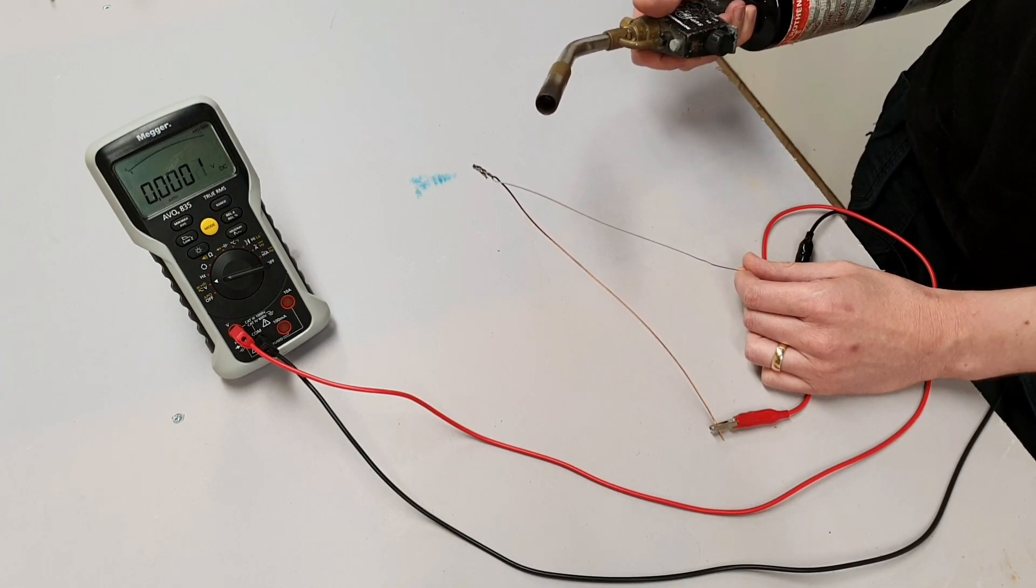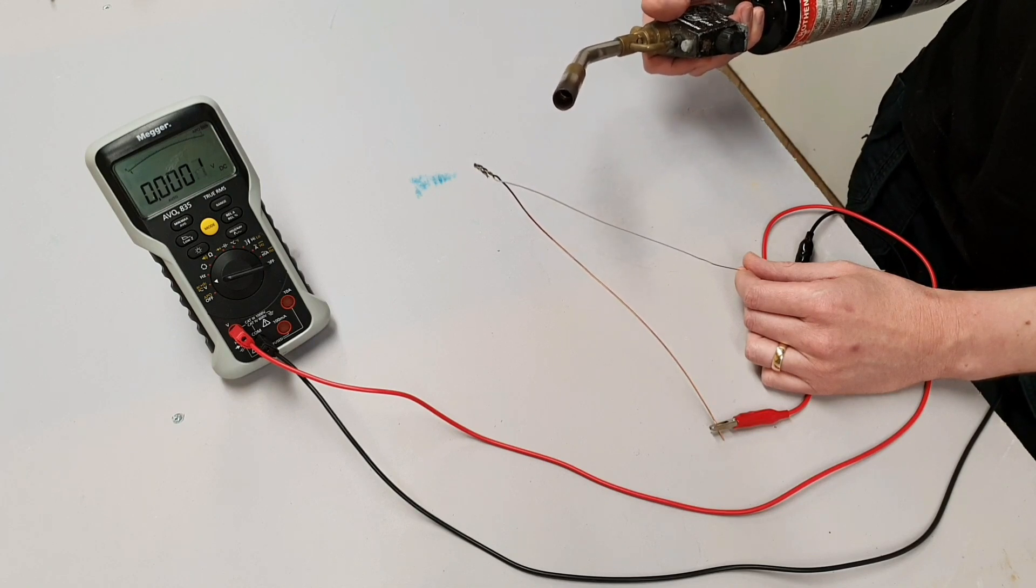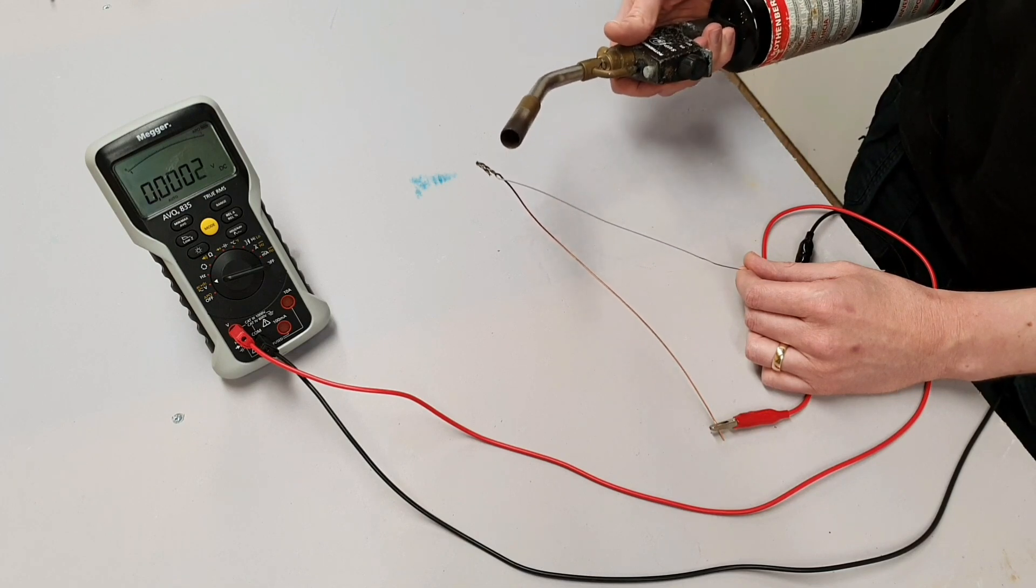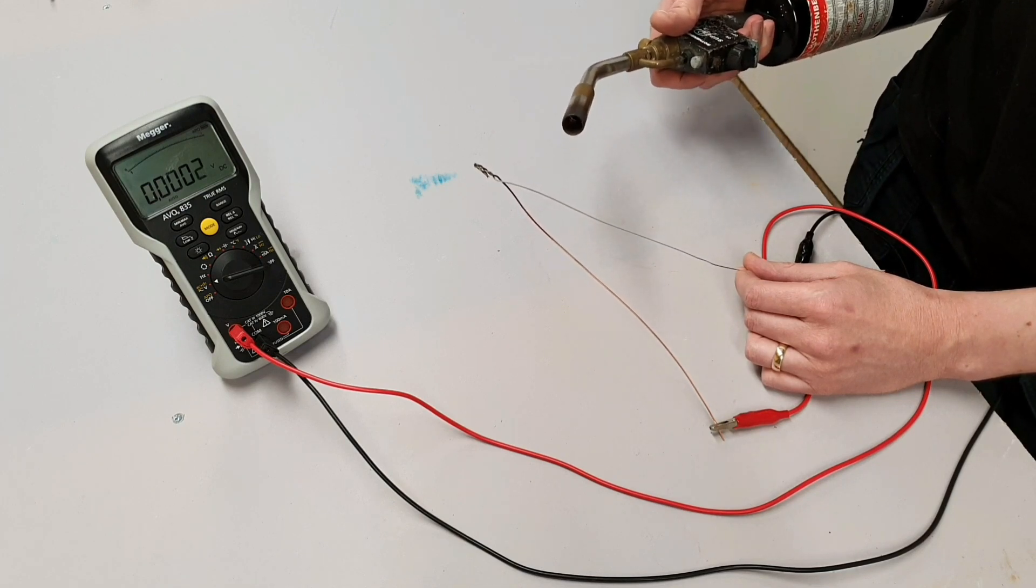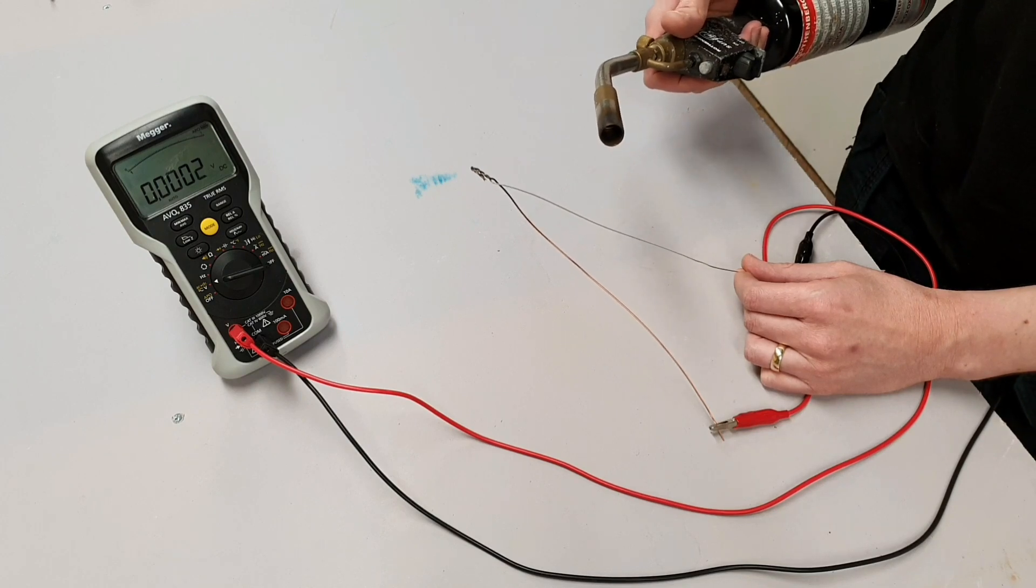We'll do another video in the future about thermocouples - there's lots of different types and we'll explore the way they work in a little bit more detail and look at some different kinds. But here we can see the basic principle that when we heat those two pieces of metal that have been joined together up, we generate a voltage.